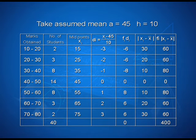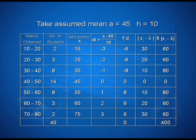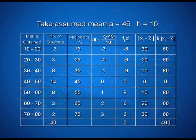Now we find the absolute value of x_i minus x-bar. They are 30, 20, 10, 0, 10, 20, and 30 respectively. Then we find the product of f_i and the absolute value of x_i minus x-bar: 2 into 30 is 60, 3 into 20 is 60, 8 into 10 is 80, and so on. The sum is also found to be 400.